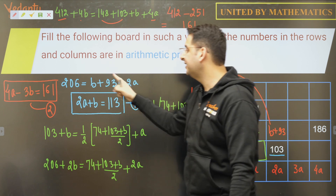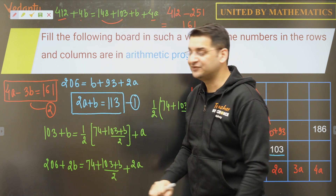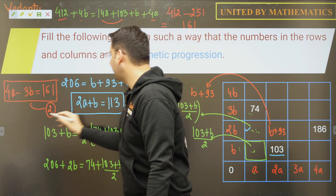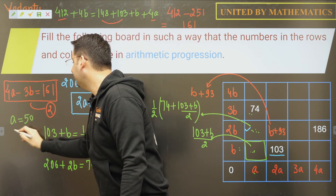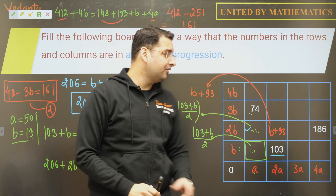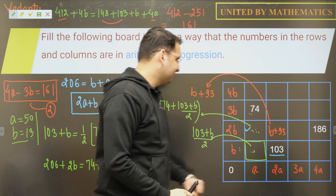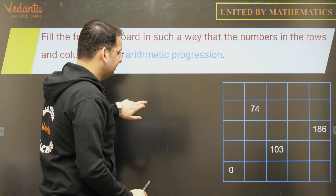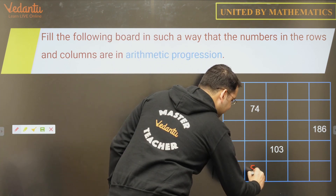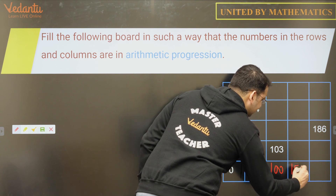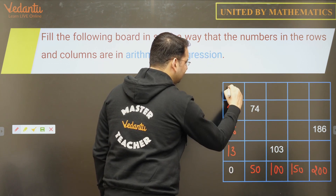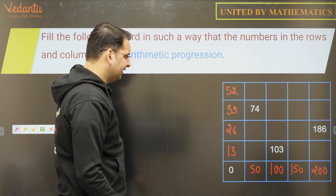We now have two equations: 2a + b = 113 and 4a − 3b = 161. Solving these simultaneously gives a = 50 and b = 13. So the first column fills as 50, 100, 150, 200, and the second reference fills as 13, 26, 39, 52.